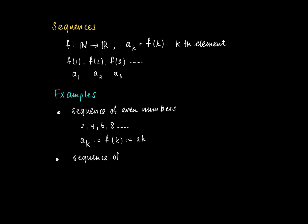The sequence of odd numbers is the sequence that we can write down as 1, 3, 5, 7, 9, etc. The formula for this sequence is, of course, a_k equals f(k), which equals 2k minus 1. It's basically the sequence of even numbers, and at each even number you subtract 1 and you get the sequence of all odd numbers.